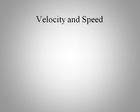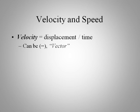Let's look at velocity and speed now. Velocity is defined as displacement over time, which again can be negative since displacement can be negative, so velocity can be negative. You could be moving backwards and so that is a vector quantity.